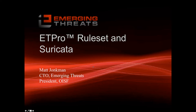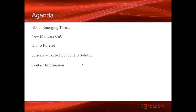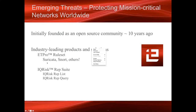Today, as Jennifer mentioned, I want to talk about a few new things we see in malware and emerging threats, some of the things we're doing with those in the ruleset, and ultimately what we've done with Suricata, which is a new open source IDS to help address some of these new threats. Emerging Threats was originally an open source community and still is very strong — a really good place to keep a pulse on what's new in malware, what's new in the community, and some of the new signatures.